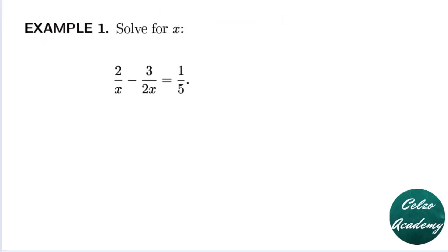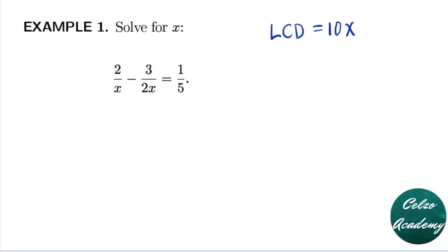Example number one: solve for x in the rational equation 2/x minus 3/2x equals 1/5. What do you think is the LCD? The LCD for this equation is 10x, because we need to multiply the numbers 5 and 2, and there is an x as well, so we take the smallest power: x to the first power.